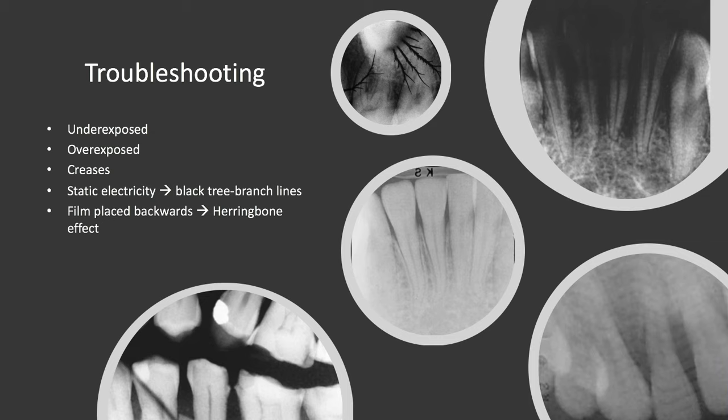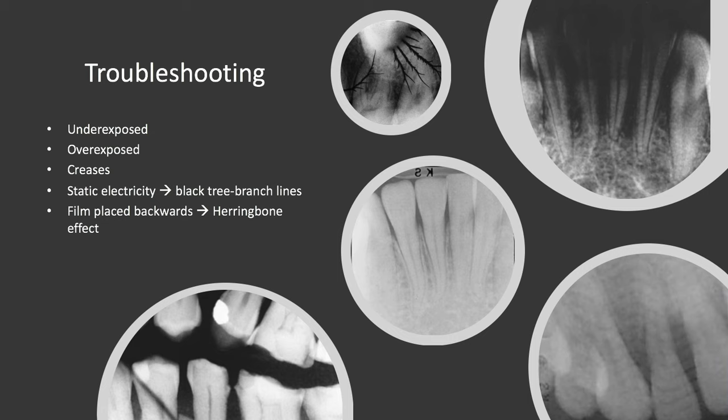For troubleshooting film issues: underexposing the image means there was an inadequate exposure time, inadequate development time, old or depleted developer chemicals, or the temperature was too low. Overexposure means the exposure time may have been too long, the image may have been overdeveloped, or it could have been exposed to light.